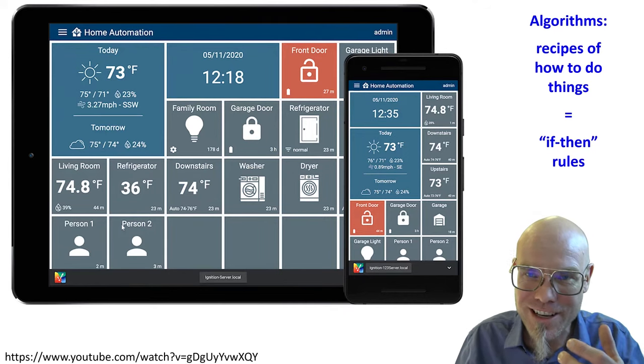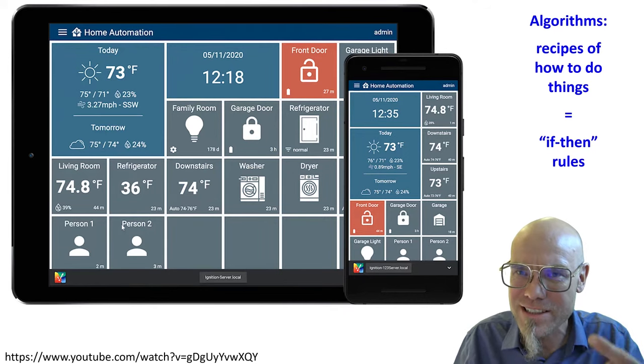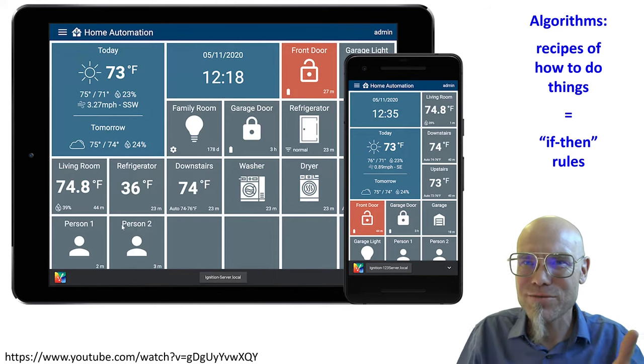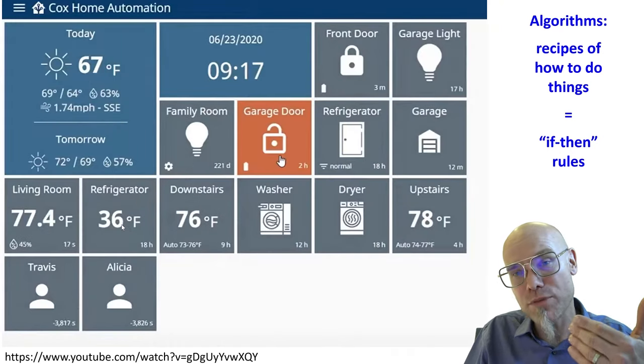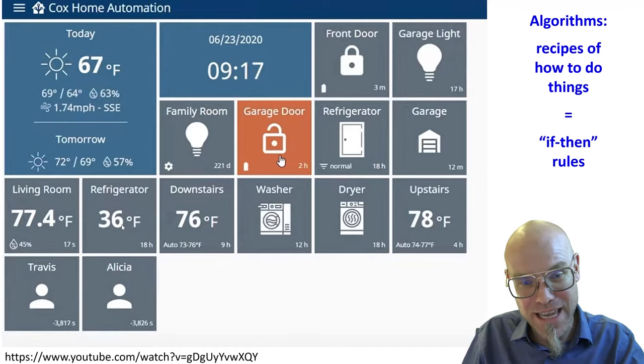Basically, the star network, the hub and spoke network is kind of like your phone interface. And then you download different apps. That's what it is to bring these things together. And then you can program different rules, if-then scenarios.